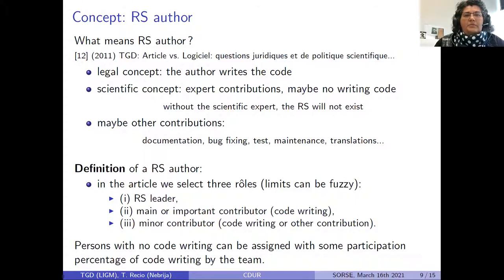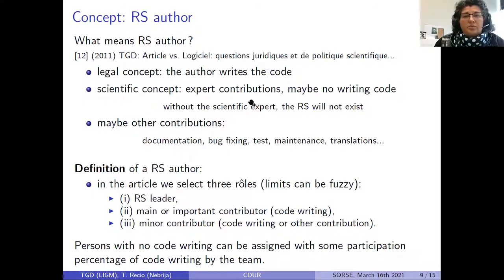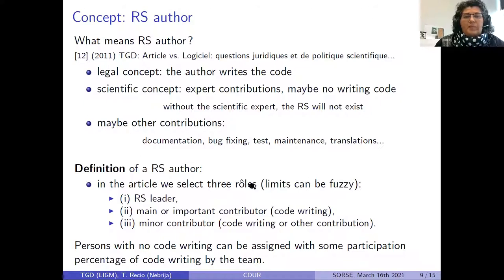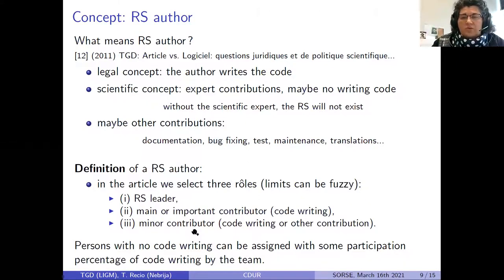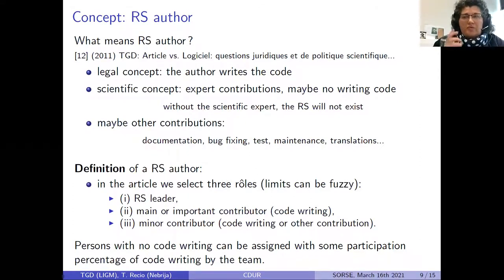The second key concept is the author. As already mentioned, the author is a legal concept — the person who writes the code. But in a research laboratory there are many different roles and contributions. There might be experts who don't write code but without whom the software would not exist. In our paper, we identify three roles: the project leader, the main contributor for code writing, and the minor contributor who does less code writing or performs other roles like testing. Persons with no code writing can be assigned a participation percentage — this is a team decision and solves many things from a legal point of view.